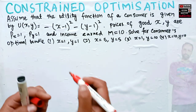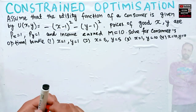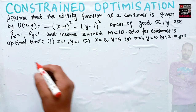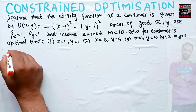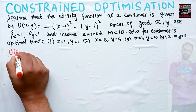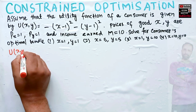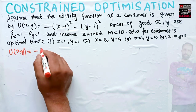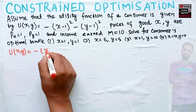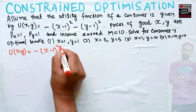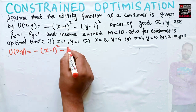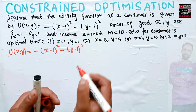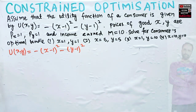We are given the utility function u(x,y) = minus (x minus 1) squared minus (y minus 1) squared. This is our utility function.